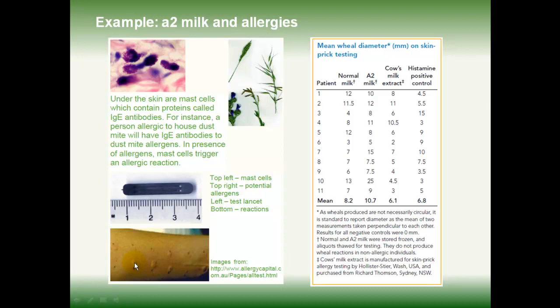That allows the test material to penetrate into the skin. If there is no response, nothing happens; otherwise, you get a lump or a wheal (W-H-E-A-L) coming up. You can see that the person has reacted to several of the test materials. Over on the right, we've got the actual results from this study for 11 patients. In each case, they've been tested with normal milk and A2 Milk. Two other materials — cow's milk extract and histamine positive control — have been included as controls, but I'm just going to refer to the normal milk and A2 Milk results.